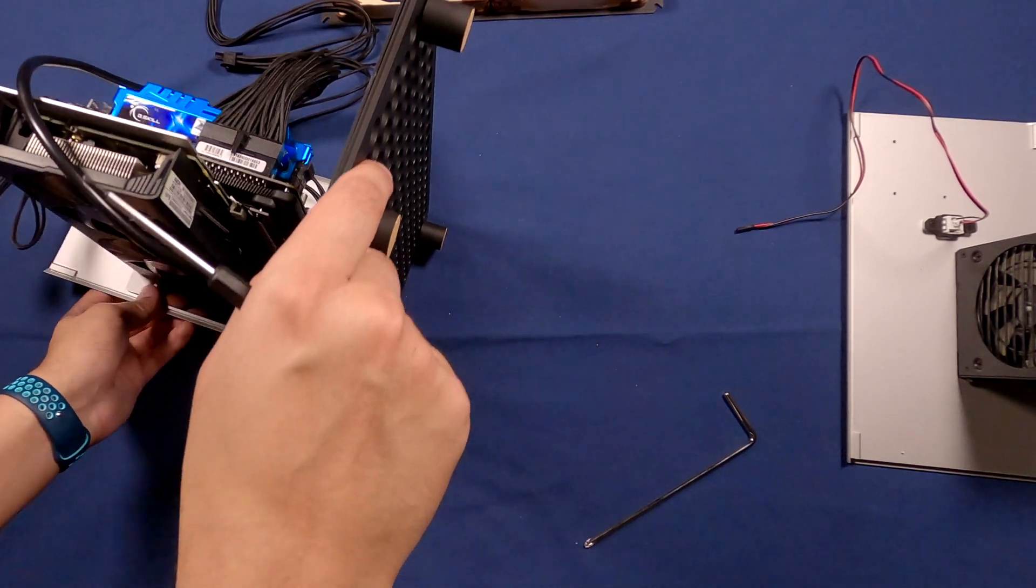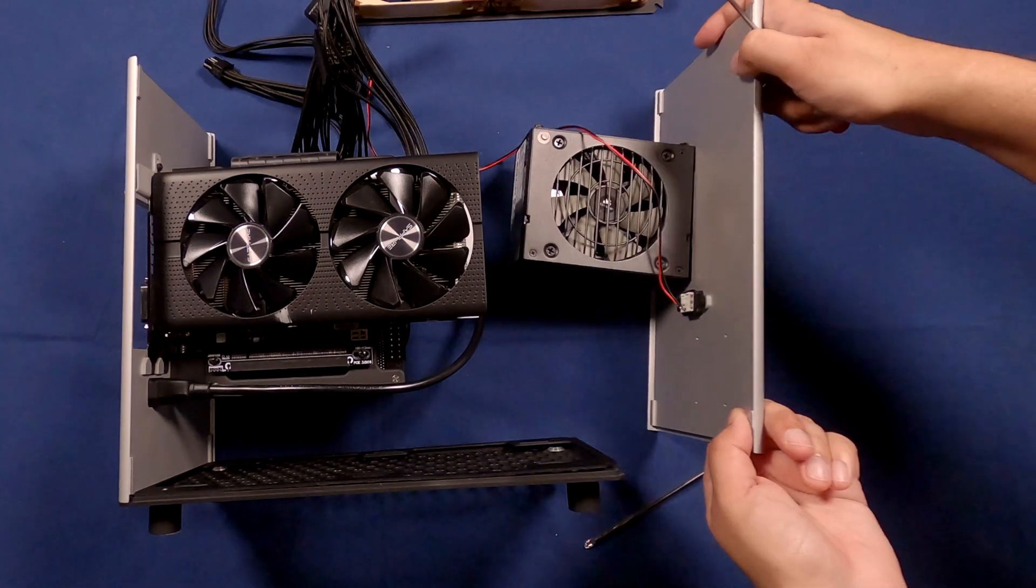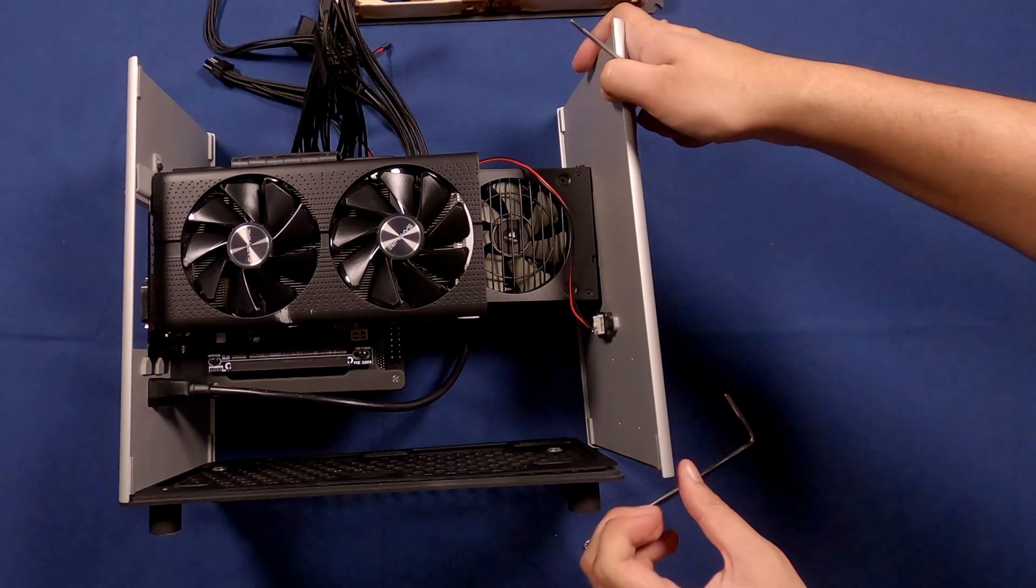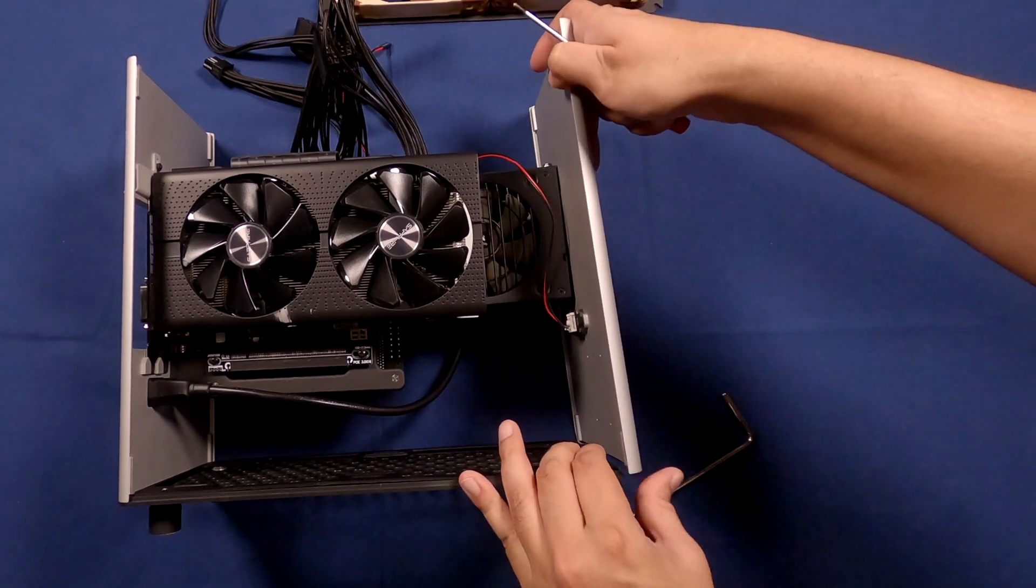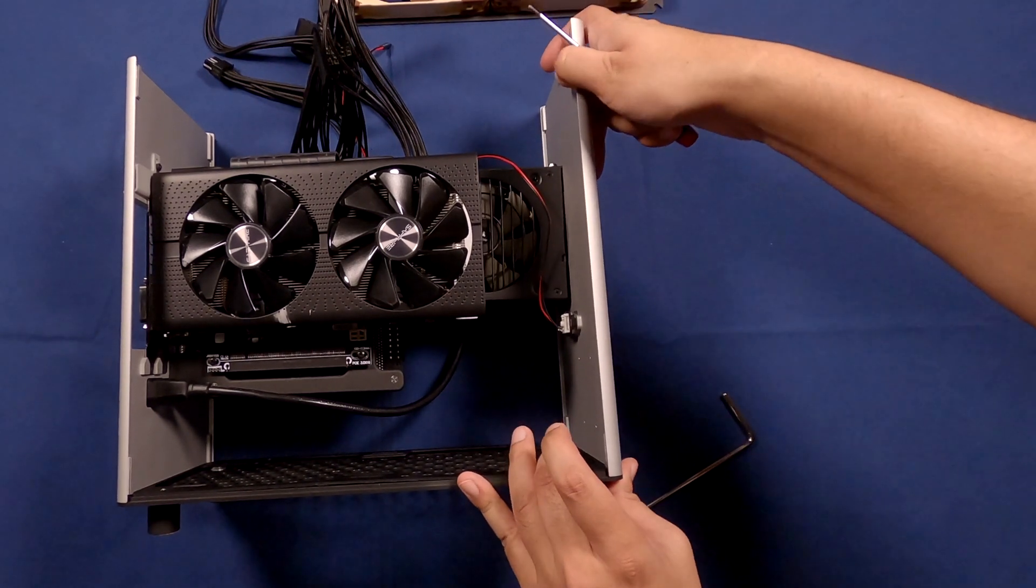Now you're going to turn everything sideways and move the front panel into position. We're going to do the same thing here where we screw it in from the bottom to secure it into place.